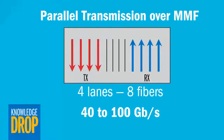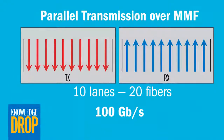Parallel transmission utilizes multiple lanes that can support 40 to 100 gigabit per second data rates. However, parallel architectures require multiple fibers to transmit and receive data. In the case of 40 gigabit Ethernet, many short wavelength parallel optical transceivers require four lanes using eight fibers. Early generation 100 gigabit short wavelength transceivers require 10 lanes or 20 fibers to operate.